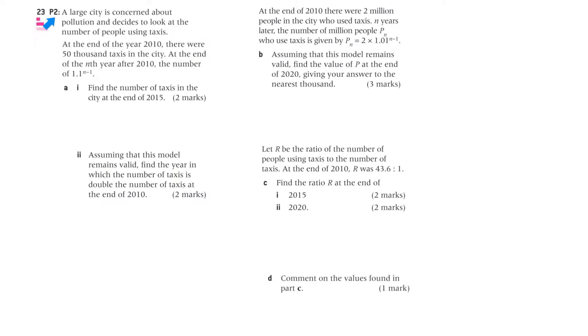Question 23, it's a paper 2 question. A large city is concerned about pollution and decides to look at the number of people using taxis. At the end of the year 2010, there were 50,000 taxis in the city. At the end of the nth year, after 2010, the number of taxis is 1.1 to the n minus 1.